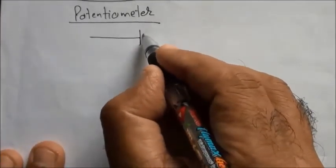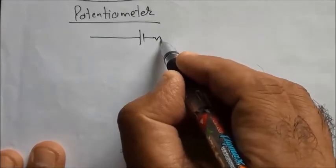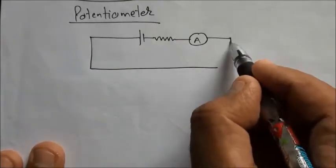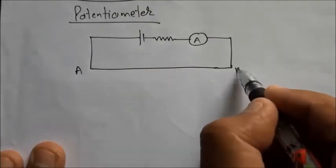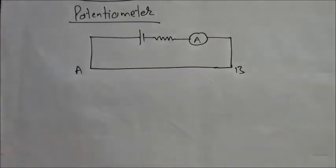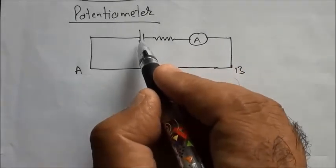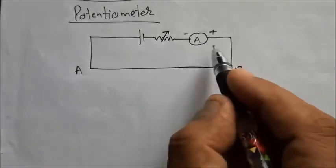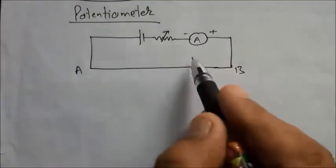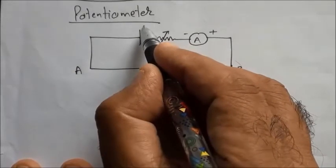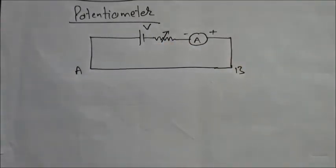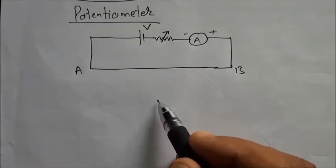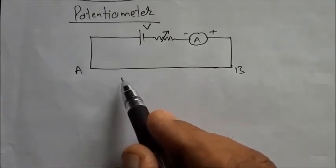The potentiometer consists of a main circuit. We have a very long wire, generally 5 to 10 meters. There is a battery, a variable resistance, and an ammeter to measure how much current is flowing through this closed circuit. Let the EMF be V. This is called the main circuit, and there is an attached circuit depending on its usage, called the auxiliary or secondary circuit.